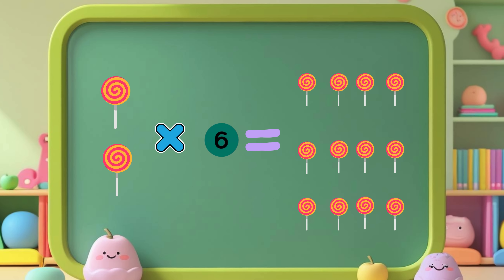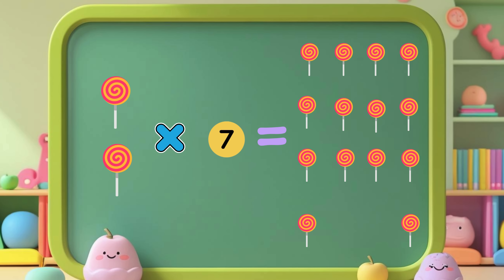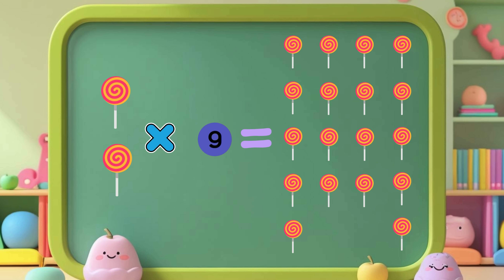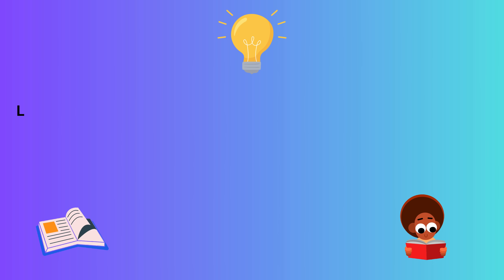Two times six is twelve. Two times seven is fourteen. Two times eight is sixteen. Two times nine is eighteen. Two times ten is twenty.